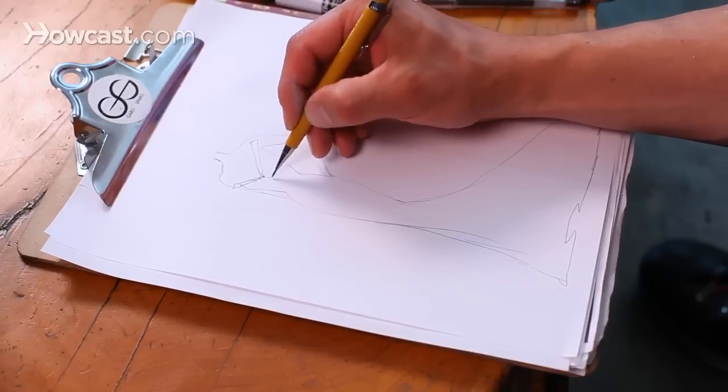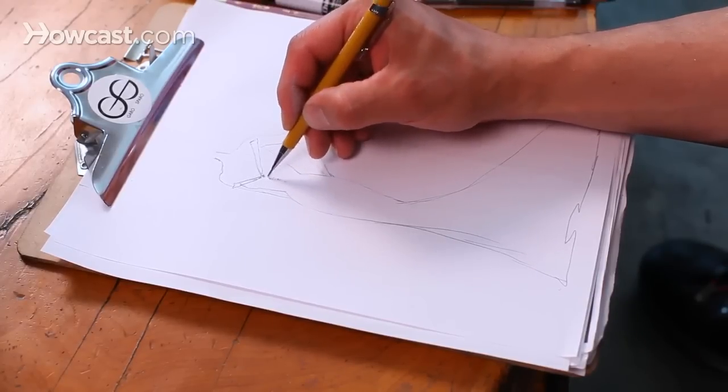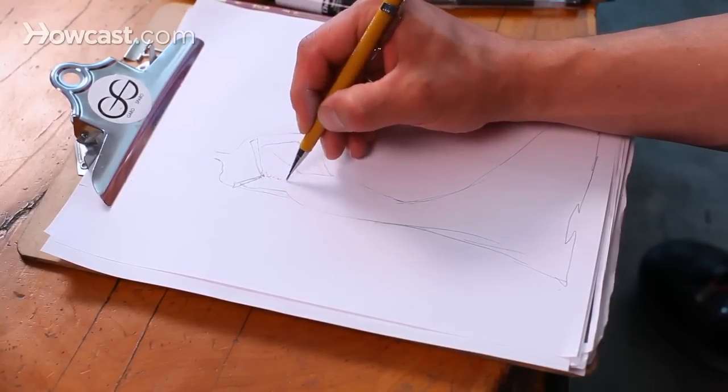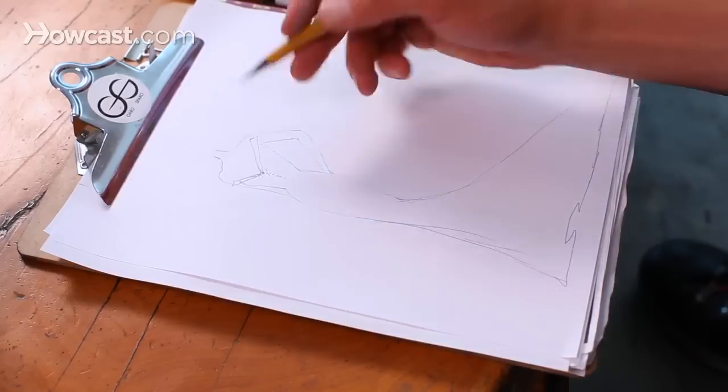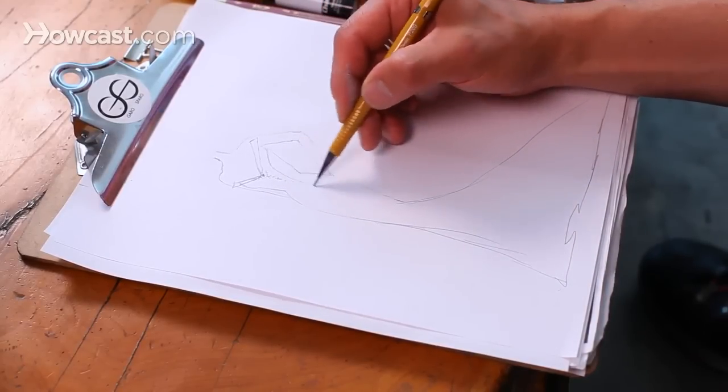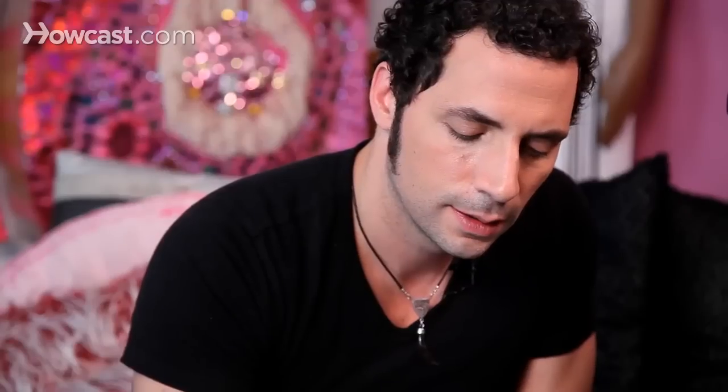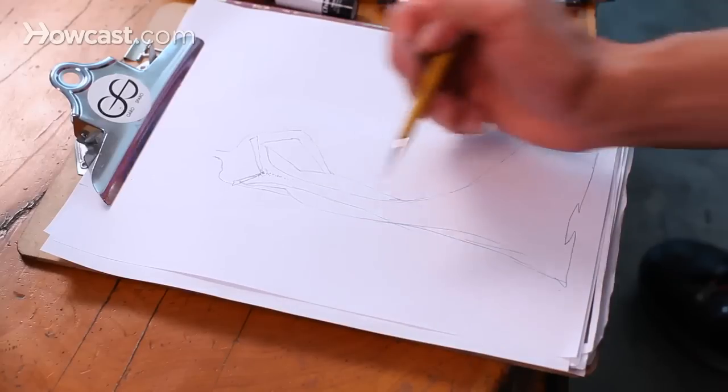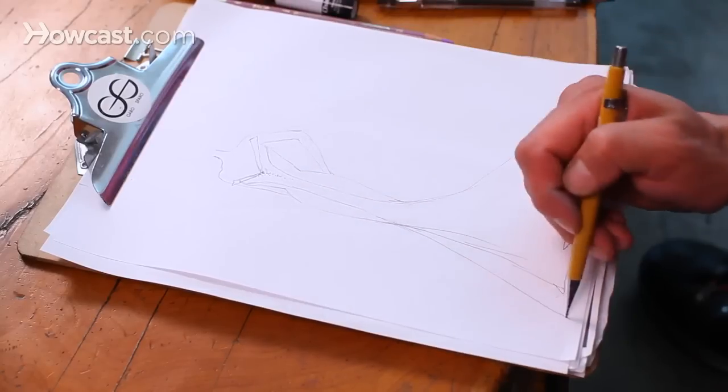You want to indicate beading, and indicating beading could be as simple as little dots. You want to indicate seam lines as well, and I'm all about long seam lines that hug the body and create beautiful lines in the gown.